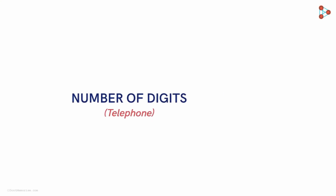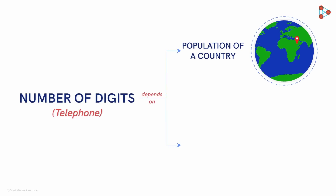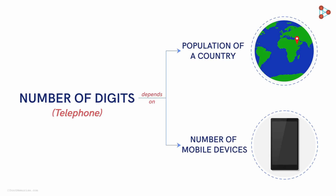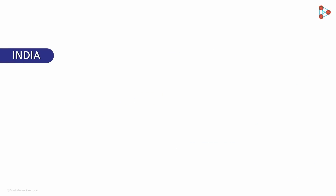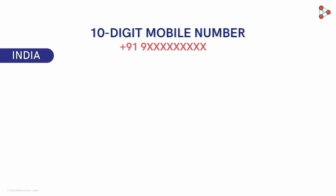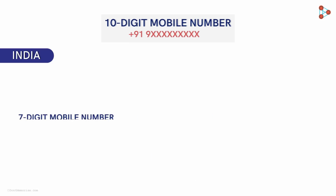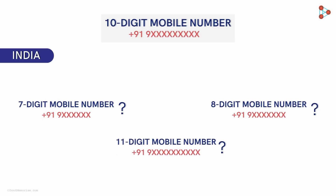The number of digits is generally dependent on two things: the population count of a country, and the number of mobile devices that the population holds. To make it simple, let's consider India as our example. India has fixed its mobile number to 10 digits, excluding the country code, such that each and every mobile number is unique — no two individuals will have the same mobile number. Otherwise, imagine the chaos it would lead to. Now, why 10 digits only? Why not 7, 8, or 11 digits for that matter?